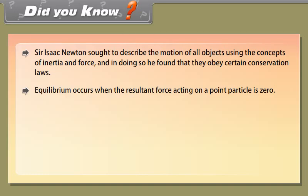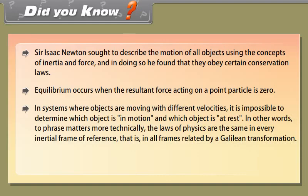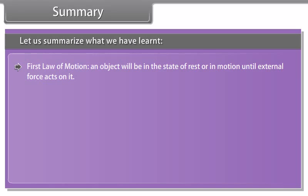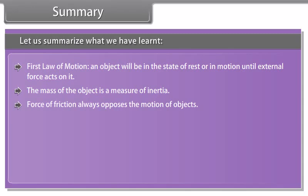Sir Isaac Newton sought to describe the motion of all objects using the concepts of inertia and force, and in doing so he found that they obey certain conservation laws. Equilibrium occurs when the resultant force acting on a point particle is zero. In systems where objects are moving with different velocities, it is impossible to determine which object is in motion and which object is at rest. In other words, the laws of physics are the same in every inertial frame of reference, that is, in all frames related by a Galilean transformation. Weightlessness when in free fall orbit around the earth, and Newton's laws of motion are more easily discernible in such environments.